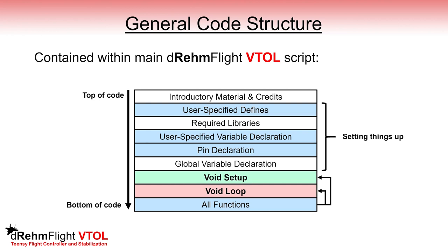I encourage you to pause the video and scroll down the Arduino script to identify these areas of the code as we talk about them. At the top is just a bunch of comments and credits. Next you'll find some user specified defines, which are used to specify what receiver and IMU type you're using. The next section is the user specified variable declaration, where there are a lot of tunable parameters pertaining to the controller gains. After that, we define all of the pin inputs and outputs for the microcontroller in the pin declaration section, and then there's a section for global variable declaration.